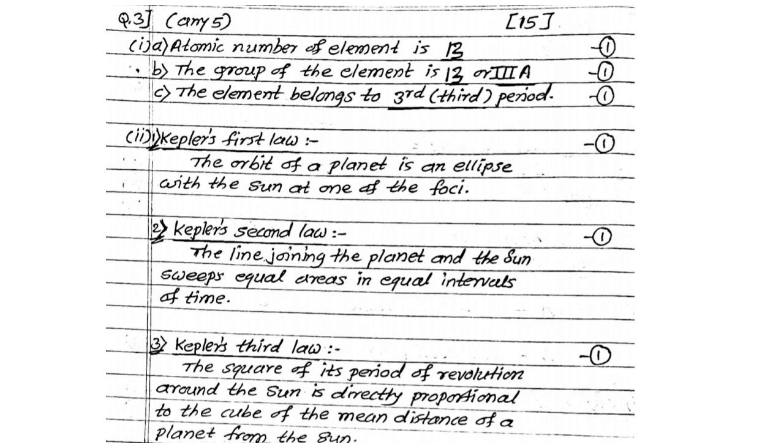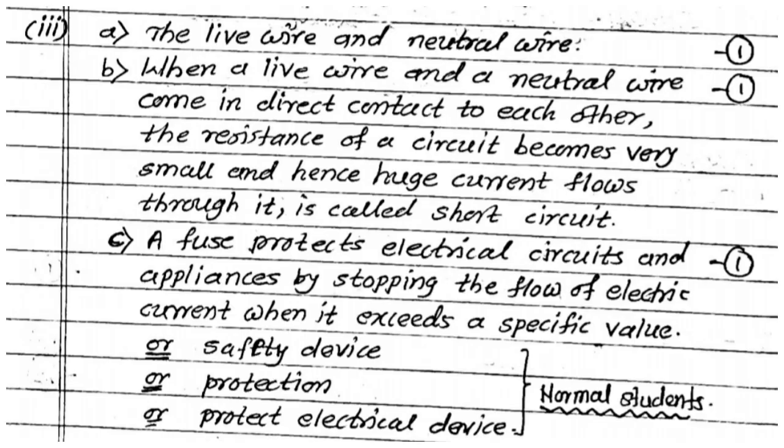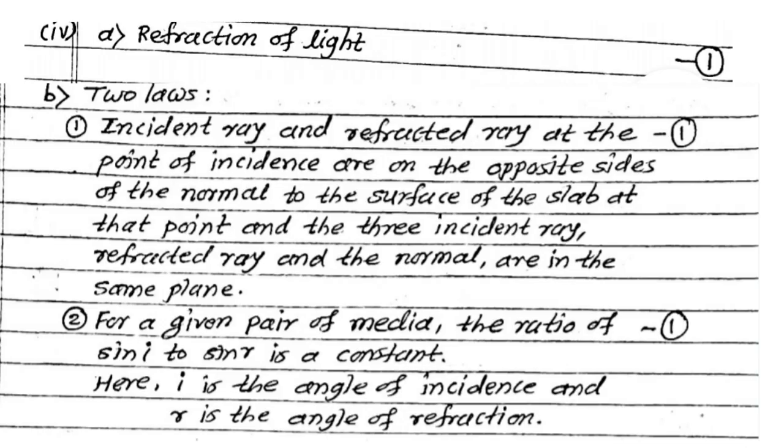Answers of that question number 3 you write like this way. See there option number 1. Atomic number of element is 13, 1 mark. Then group of the element given there 13 or third A, element belongs to third period. Each answer you are getting 1 mark. Clear? Answers of question number 3 paragraph related. Live and neutral wire that is 1 mark. Then what is short circuit that is 1 mark. And what is the function of fuse you are getting 1 more mark. For clever student write the proper answer of the C option. Normal student write safety device, protection, protect electrical circuit etc.